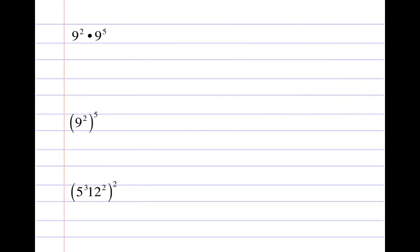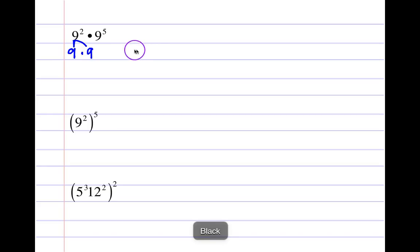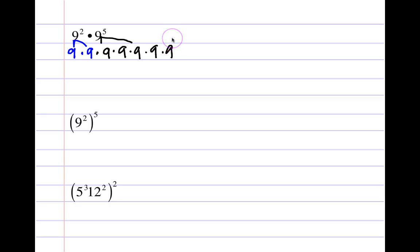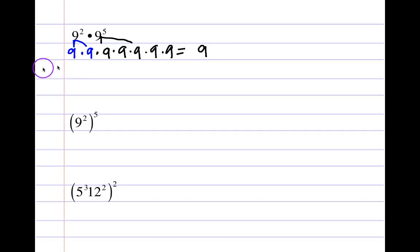Now let's apply what we've learned. Nine squared expands to nine times nine. Nine to the fifth means repeating nine a total of five times. In most scenarios, you'll be asked to write in exponential form since multiplying all these nines out is unreasonable. So counting: one, two, three, four, five, six, seven — since nine is repeated seven times, the answer is nine to the seventh power.